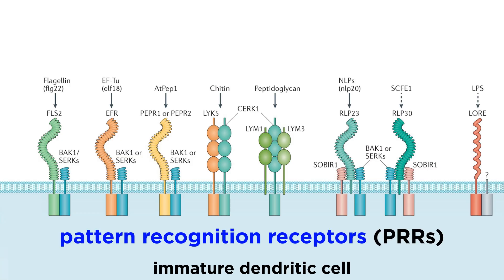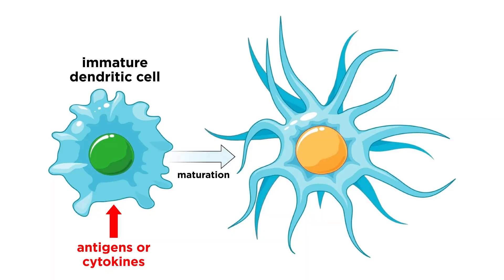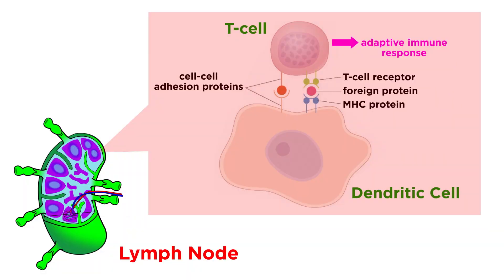Immature DCs express various pattern recognition receptors that constantly sense the surrounding environment for pathogens, such as viruses and bacteria. Activation and maturation of DCs is initiated after capturing appropriate antigens or inflammatory cytokines. Mature DCs then perform their primary task of antigen presentation at their cell surface using MHC molecules, and this interaction with lymphocytes occurs in the lymph nodes.